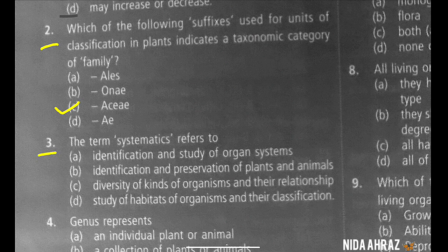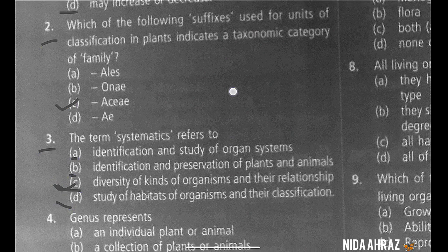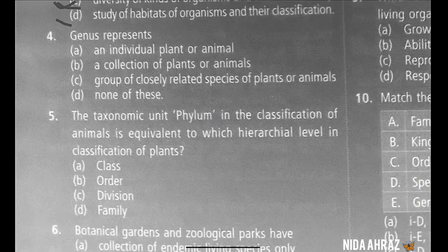The term systematics refers to: identification and study of organ systems; identification and preservation of plants and animals; diversity of kinds of organisms and their relationships; or study of habitats of organisms and their classification. The correct choice is option C.